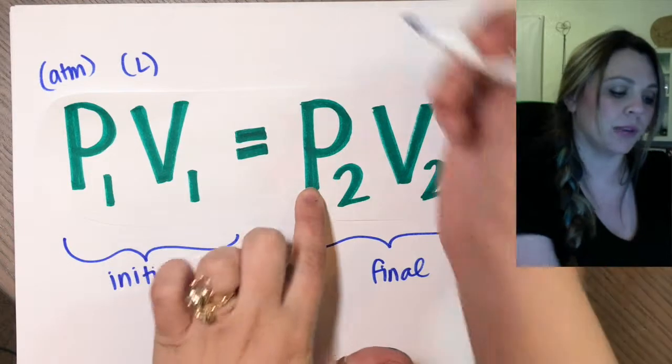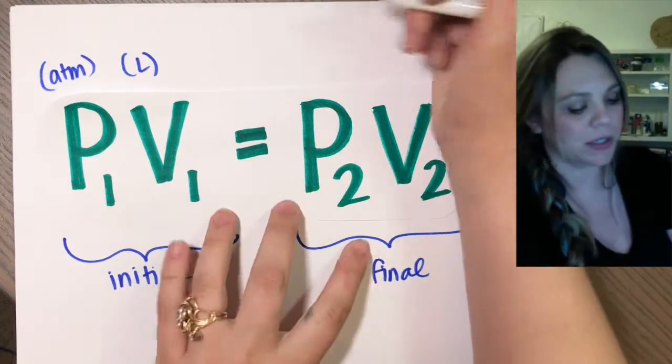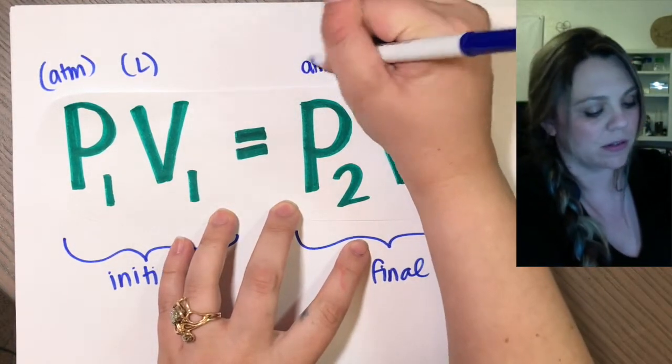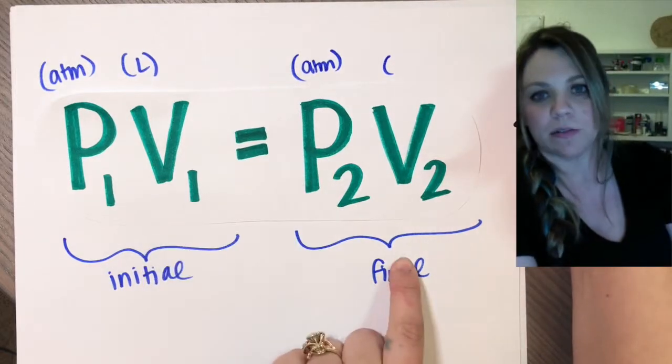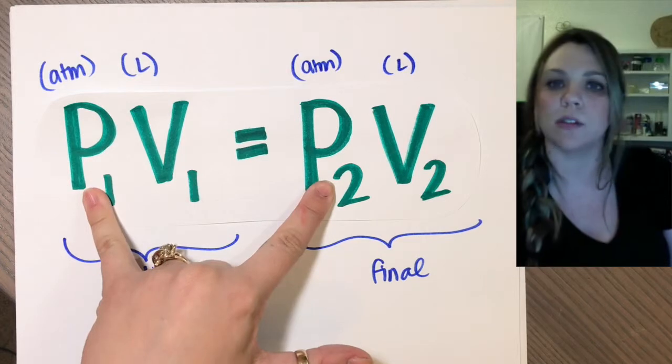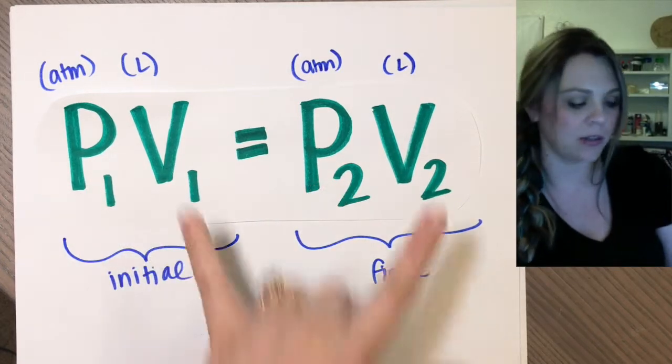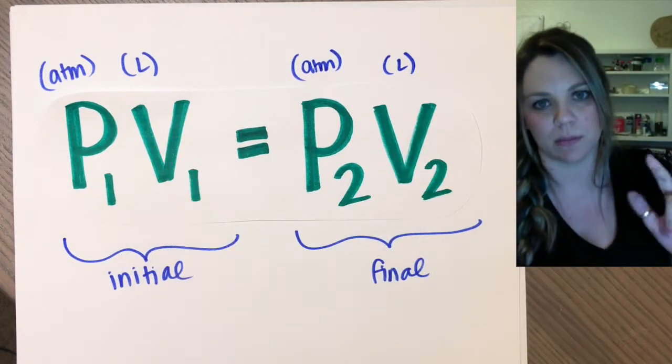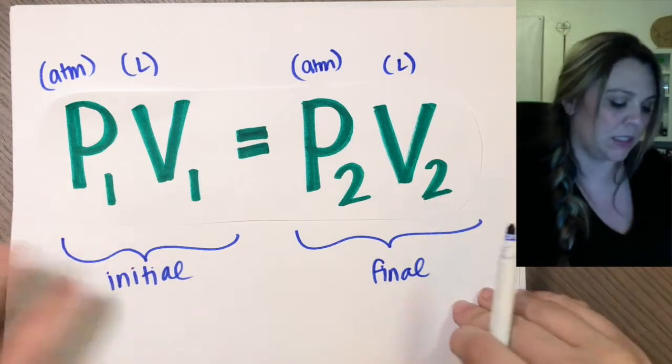So I'd say unless the question specifically asks you to solve for pressure in mmHg, solve for it in atmospheres. Just that way you're in a good habit and you won't screw up when you eventually get to ideal gas law. And again, pressure two, so whatever your final pressure is going to be, is in atmospheres, and your final volume is also going to be in liters. You have to have the same units of pressure compared to each other and the same units of volume compared to each other.